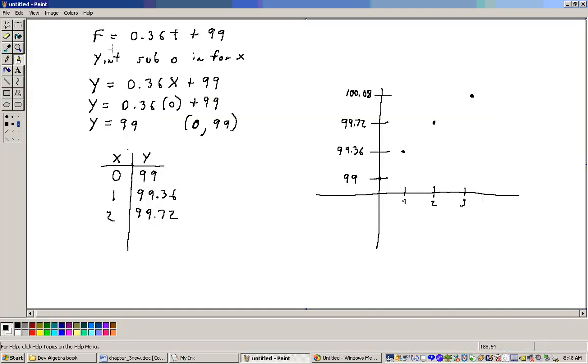Here's the equation, F equals 0.36T plus 99. The Y-intercept is going to be this spot right here, 0, 99. It always is when the equation is solved for the dependent variable. Now, if you want to check it,